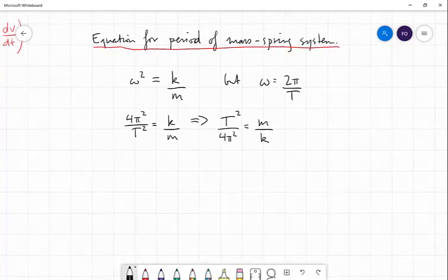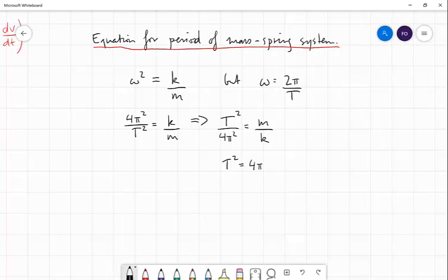So we get T squared is just 4 pi squared M over K. And then we can just take the square root of both sides and we get T is equal to 2 pi times the square root of M over K. And this is the equation for the period of a mass spring system.